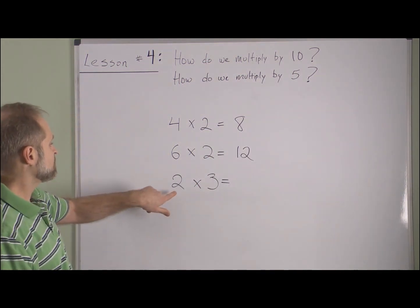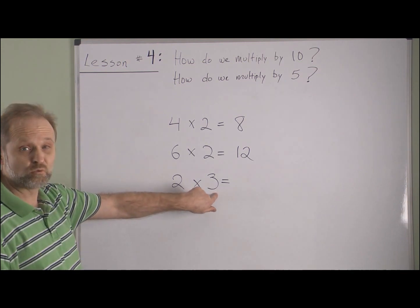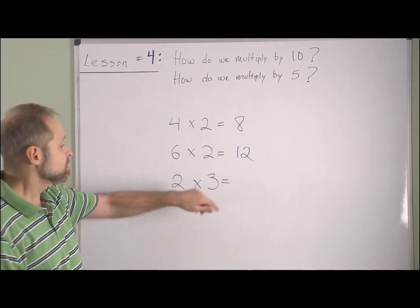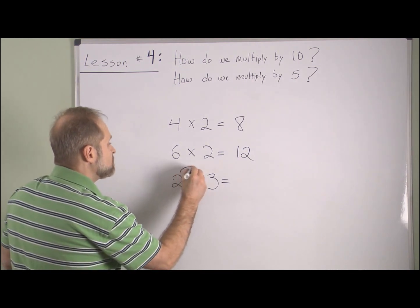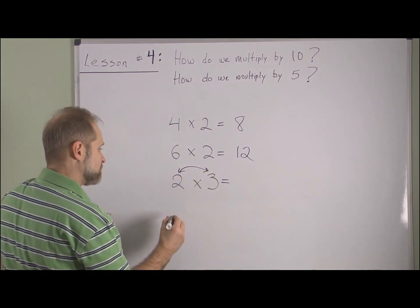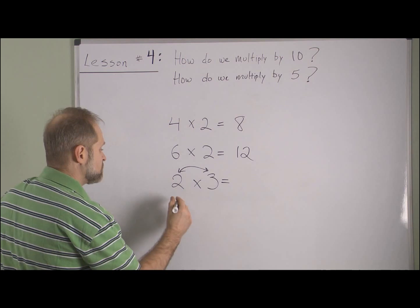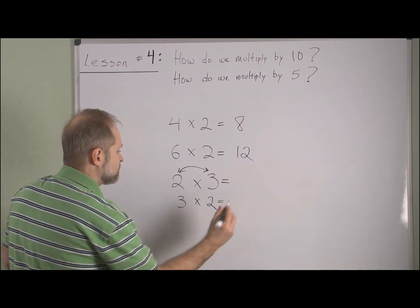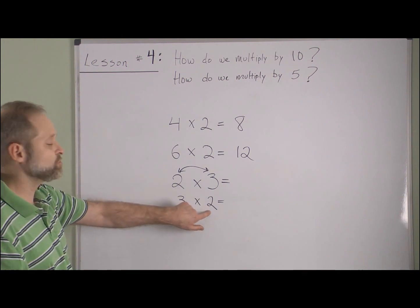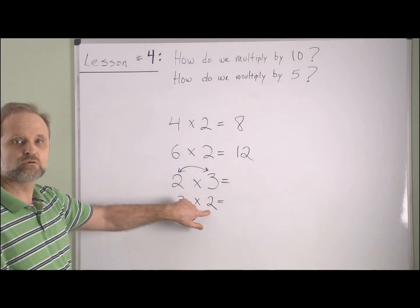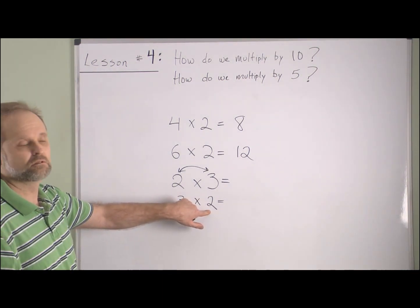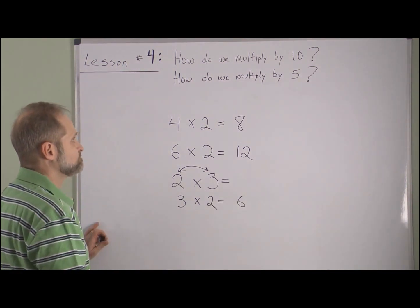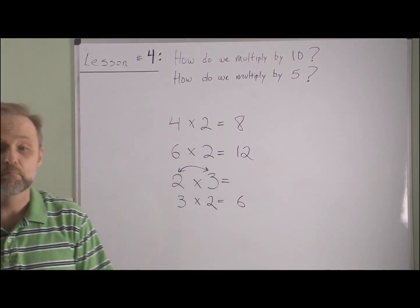This last one is two groups of three. We haven't done skip counting by three, but we know we can switch the order without changing the answer, making this three groups of two. With three groups of two, we can skip count quickly in our heads and we know the answer will be six. So that is skip counting by twos.